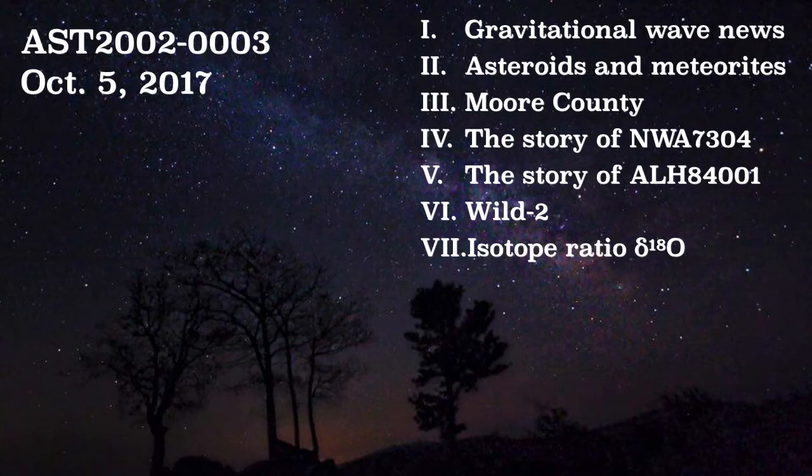Okay, we're going to talk about several topics today, mainly asteroids and meteorites, since they are related pretty closely. We're going to talk about NWA 7304 and another famous one, ALH 84001. Then we're going to talk about some comet topics, the comet Wild 2, and then we're going to calculate some isotope ratios in the last few minutes of class. We're going to do some clicking, so have your clicker handy.